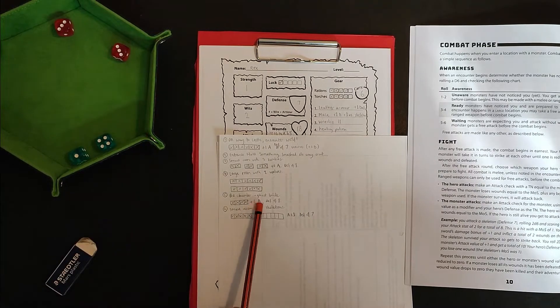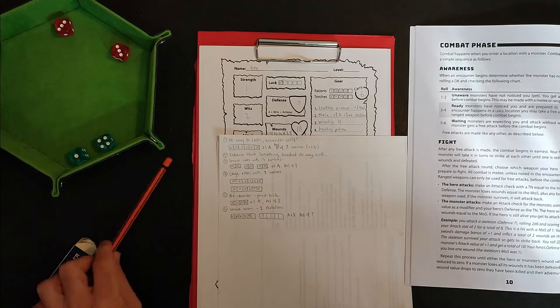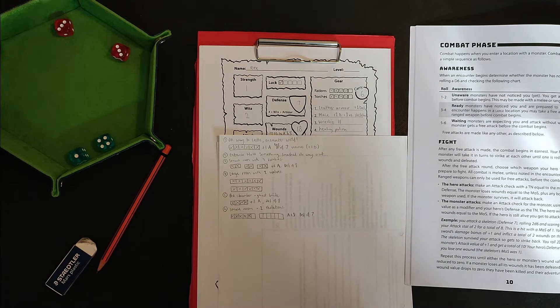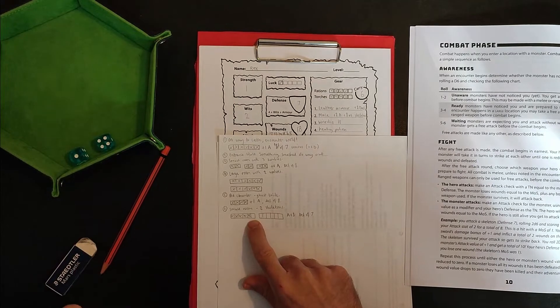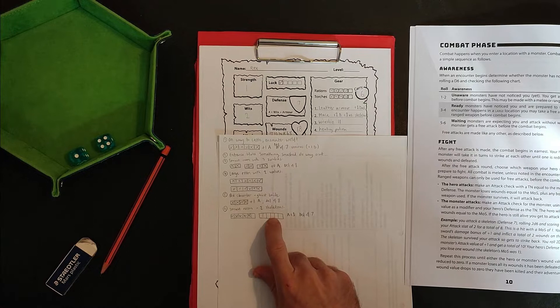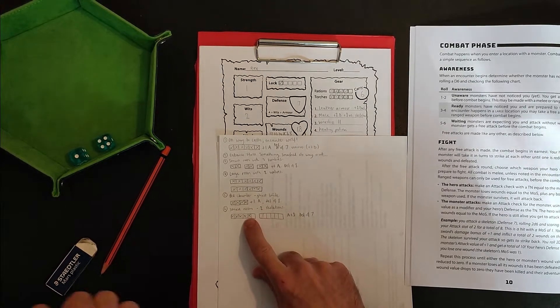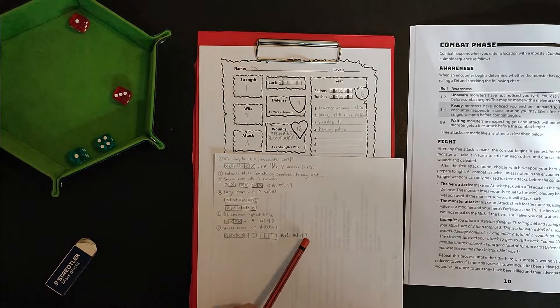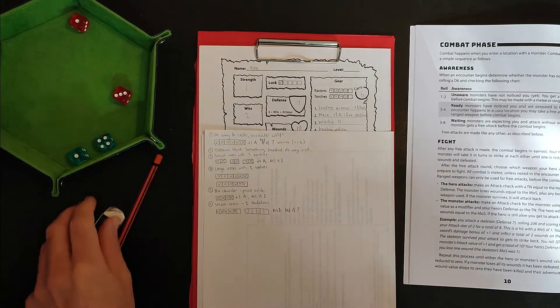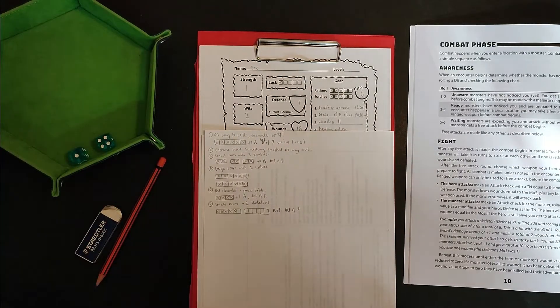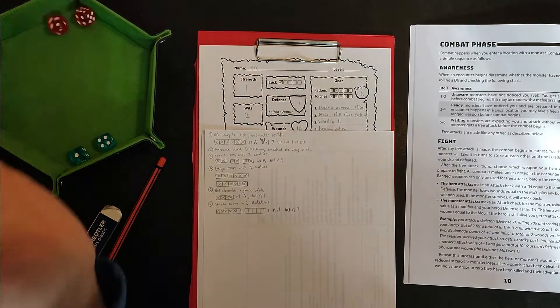Okay, now the skeleton gets to attack me back. Six, attack bonus of one. So seven, which equals my defense, but you need to be greater than defense to do any damage. So no damage done to Rex. Okay, so let's try and do that final point of damage needed to kill the first skeleton. Note that the skeleton didn't get an attack bonus for having a skeletal backup because that doesn't happen in a small room. Oh, that's not good. Four, five, six, seven. So I haven't done any damage this round. Skeleton attacks me back. Skeleton doesn't do any damage.